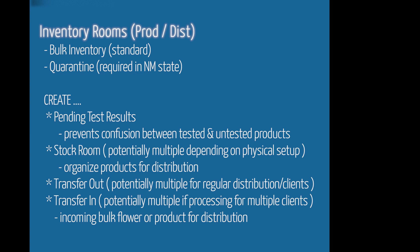My recommendation on inventory rooms for a production or distribution location is slightly different than retail, but pretty similar. Again, you're going to have a bulk inventory which comes standard and a quarantine for those transfers in and transfers out. In addition, you probably want to create a pending test results room so that all the product you're waiting to get results back on can live there, so you don't accidentally send it out or get confused about the product's viability.